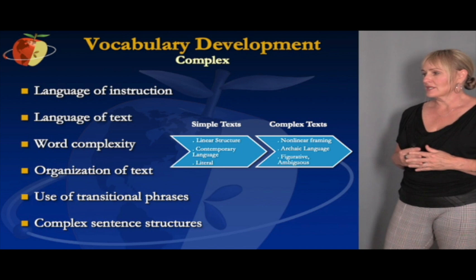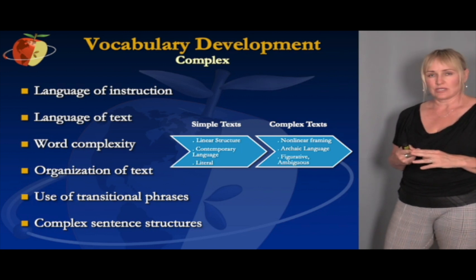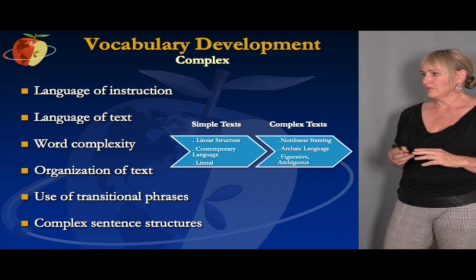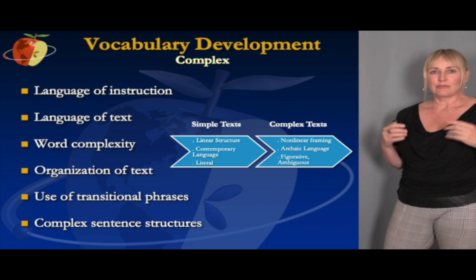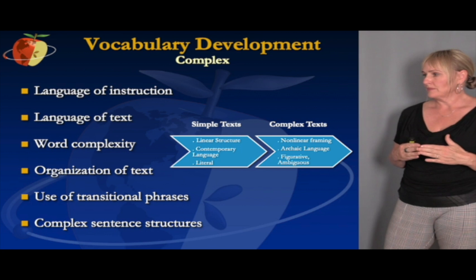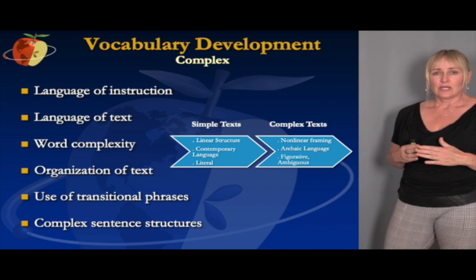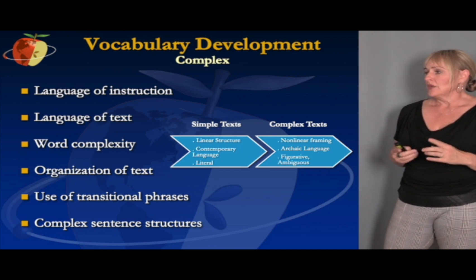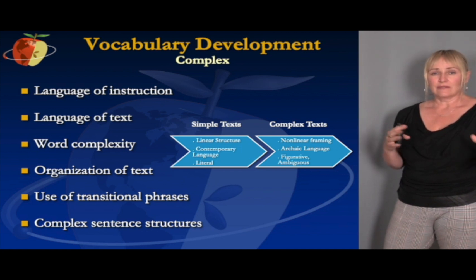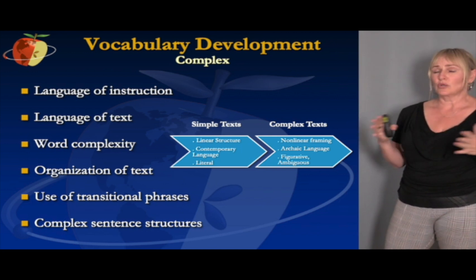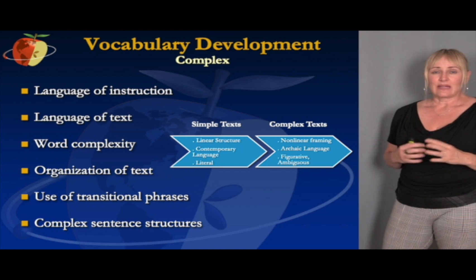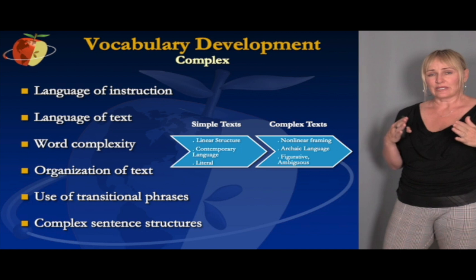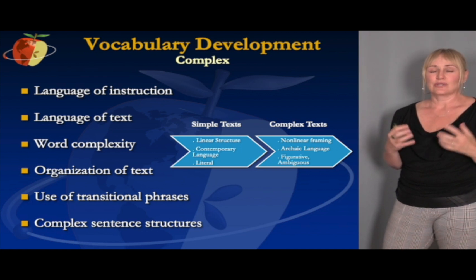Supporting complex vocabulary development looks like breaking down the language of instruction, the language of the text itself, and word complexity. We have different tiers of words with various complexity levels — identifying those levels and providing direct explicit instruction for those words. This also includes talking about how the text is organized, since text organization helps students understand vocabulary. Teaching the vocabulary of transitional phrases and supporting understanding of complex sentence structures all build students' ability to comprehend text better.